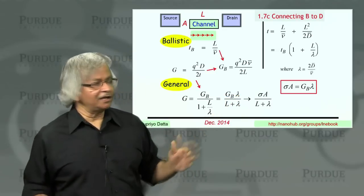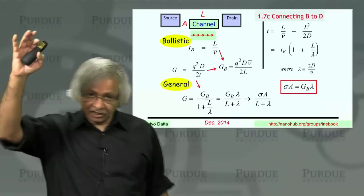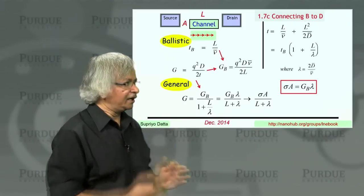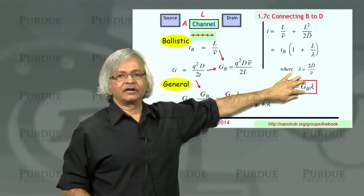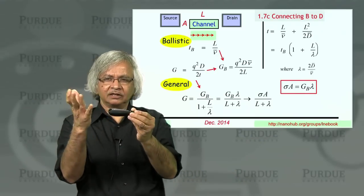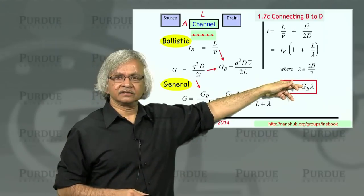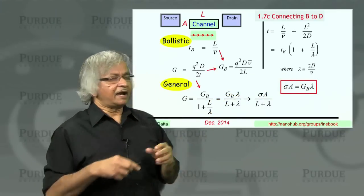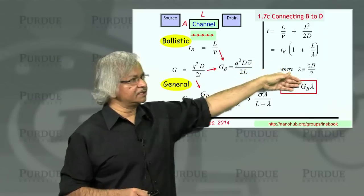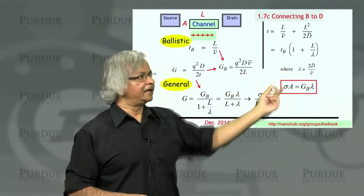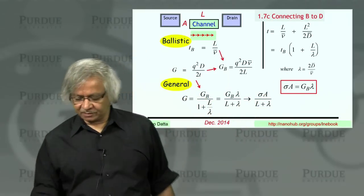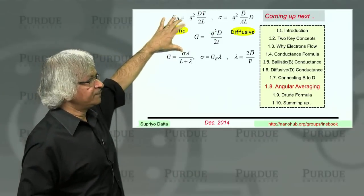The thing to note is that the sigma A you can identify with is GB times lambda. Usual understanding of conductivity starts from large conductors. Whereas in this new perspective that we are using here, the fundamental thing you first look at is the ballistic conductors. Any material, first thing you ask is, if I made it really short, what conductance would I measure? That's this ballistic conductance. That's a material property. Now you ask, if I make it long, what is the conductivity? The answer is take your ballistic conductance multiplied by the mean free path, and that will be this conductivity times area.